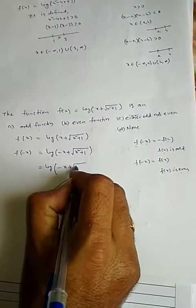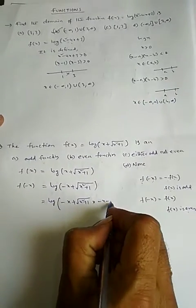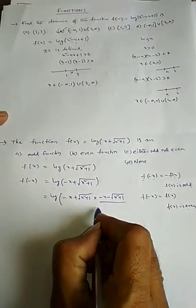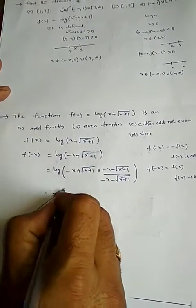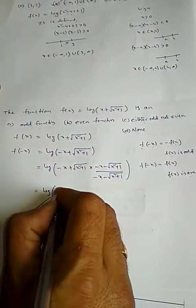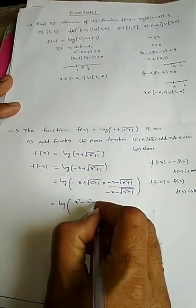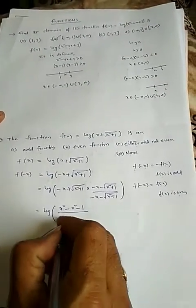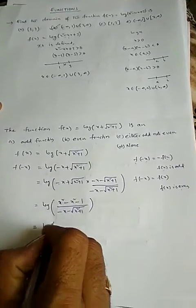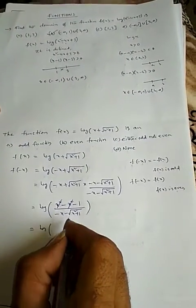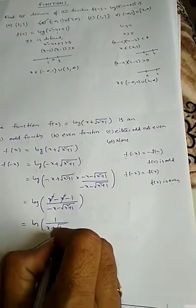To simplify log(-x + √(x² + 1)), we rationalize by multiplying numerator and denominator by (-x - √(x² + 1)). Using the identity (a + b)(a - b) = a² - b², the numerator becomes x² - (x² + 1) = -1, giving log(-1 / (-x - √(x² + 1))). Taking the minus common from the denominator gives log(1 / (x + √(x² + 1))).